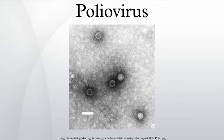Poliovirus was first isolated in 1909 by Karl Landsteiner and Erwin Popper. In 1981, the poliovirus genome was published by two different teams of researchers: by Vincent Racaniello and David Baltimore at MIT, and by Naomi Kitamura and Eckerd Wimmer at Stony Brook University. Poliovirus is one of the most well-characterized viruses and has become a useful model system for understanding the biology of RNA viruses.